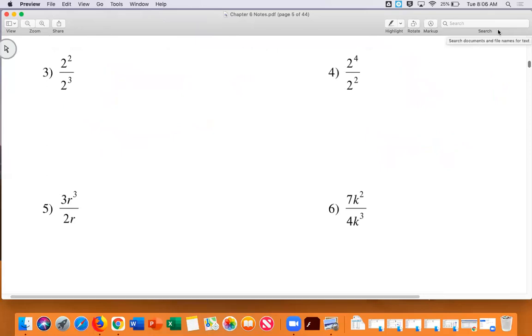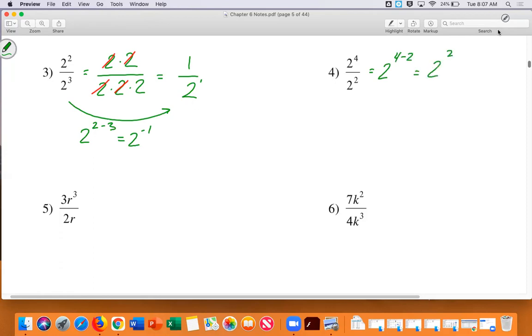Here, in number three, I have two twos on top and three twos on bottom. I can cancel some of these twos out. And I have one over two. And if I were to do it that shortcut way, I would see that I need to do two minus three, which is two to the negative first. And we can see that, again, they're the same. Here, two to the fourth over two to the second. That's two to the four minus two. And that's two squared. AJ, you okay with that?